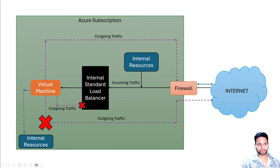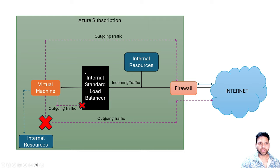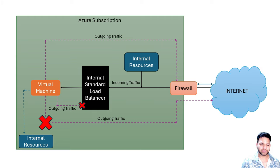In this case, you can create user-defined routes on the virtual machine and send the traffic to the firewall. In the user-defined routes, you provide the next hop as the firewall. The outbound traffic going to the internet will go through the firewall, and there will be rules in the firewall that allow the traffic to the internet. If you have a firewall in place, you can manage both incoming and outgoing traffic using it.